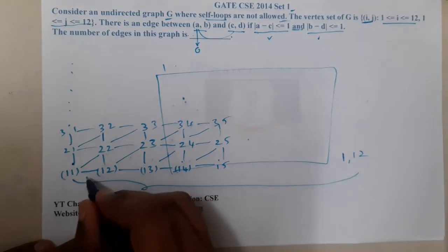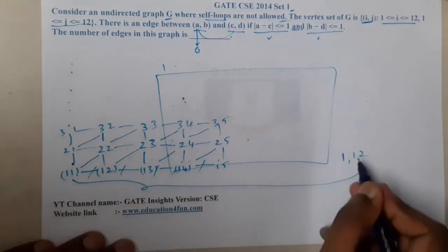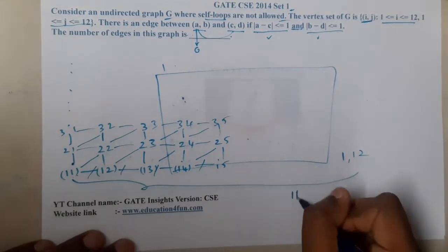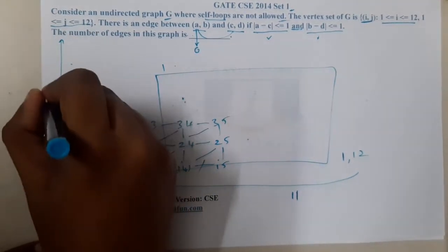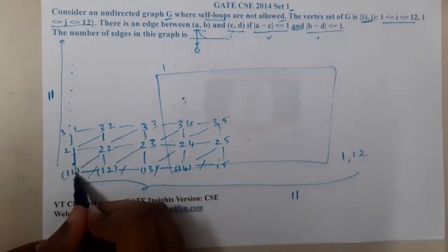Basically, the diagram will look in this way. I hope everyone is understanding. Until where will you go? You'll go until (1,12). So basically, how many edges will be here? If it is up to 5, there are 1, 2, 3, 4.